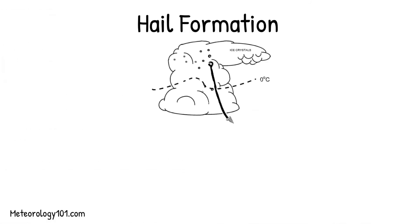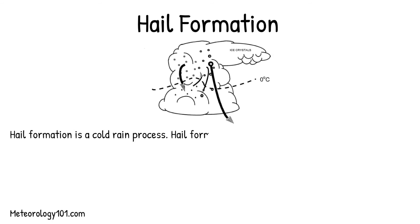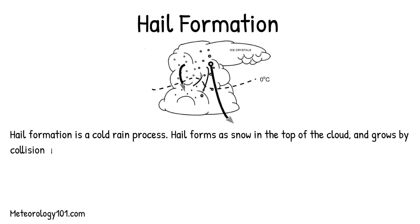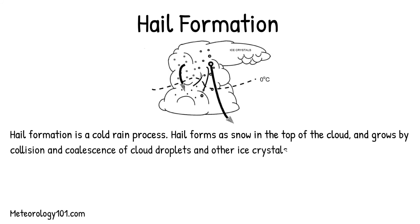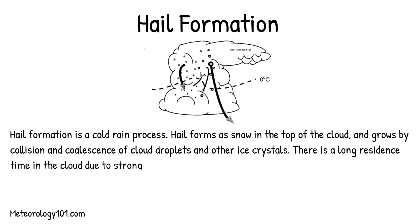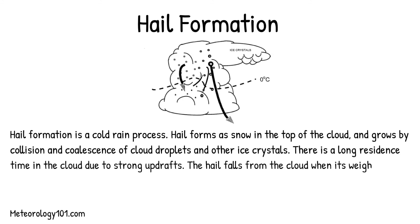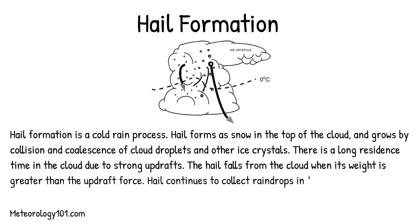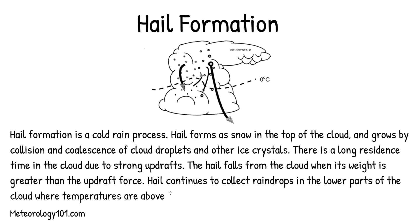Hail formation is a cold rain process. Hail forms as snow in the top of the cloud and grows by collision and coalescence of cloud droplets and other ice crystals. There is a long residence time in the cloud due to strong updrafts. The hail falls from the cloud when its weight is greater than the updraft force. Hail continues to collect raindrops in the lower parts of the cloud where temperatures are above freezing.